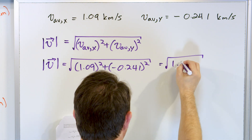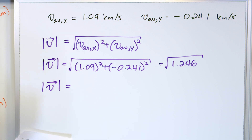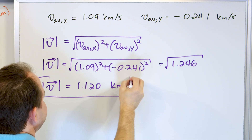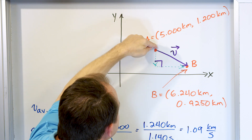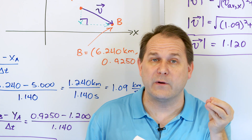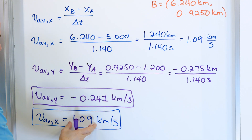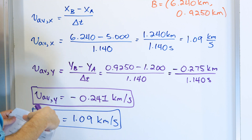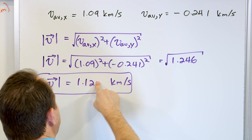Taking the square root of 1.246 gives a magnitude of 1.120 kilometers per second. This is the length of the total velocity vector — a mixture of both x and y motions. The total speed along the actual path is 1.120 km/s, which combines the horizontal speed of 1.09 km/s and the downward speed of 0.241 km/s. These two sum together to give the slanted motion at 1.12 kilometers per second.